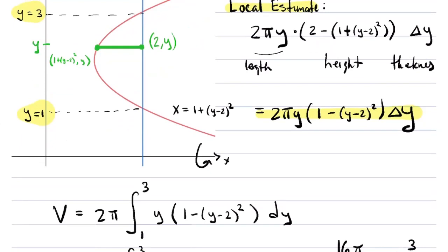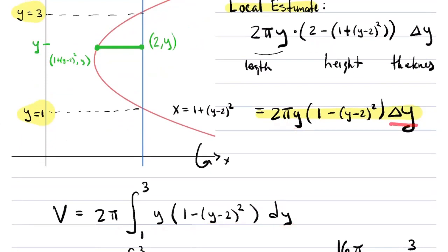Let me reveal the integral. I moved the 2π in front because it's a constant. So we can see the pieces: I've got y, then 1 minus (y minus 2) squared, and my dy — the infinitesimal thickness of those shells. It's the same idea, the same kind of setup. We're just integrating with respect to y because our shell is determined by the y variable.